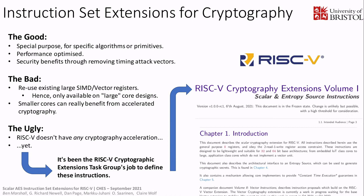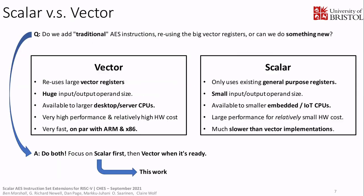The authors of this paper and many others are members of the RISC-V cryptography extension task group, and it's our job to make RISC-V the best architecture out there for doing cryptography. The first question we started with was: do we go down the traditional route of accelerating AES using the forthcoming RISC-V vector registers, or do we take a different approach — the scalar approach — using only existing general-purpose registers?